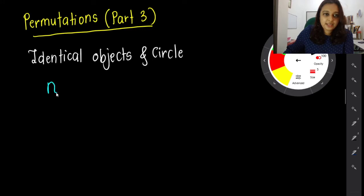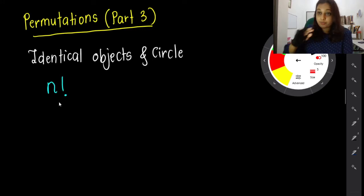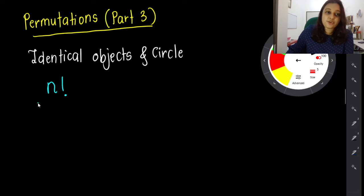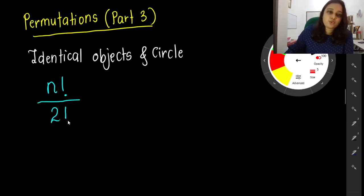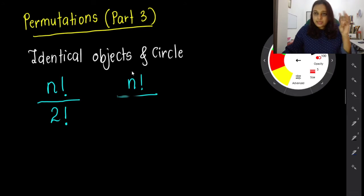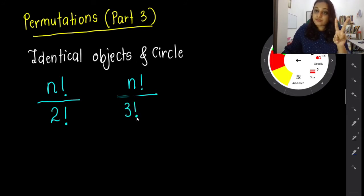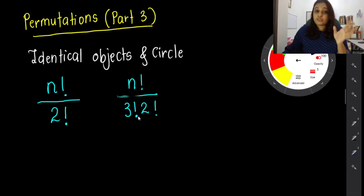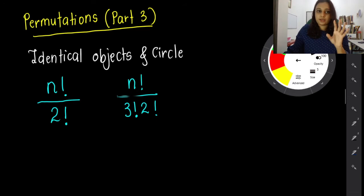The formula is: take the total number of things you have to arrange as a factorial on top. Then if you have identical items, divide by their factorials. For example, if you have three apples (same category) and two oranges (same category), the formula would be: total factorial divided by three factorial times two factorial. Let me show you using a problem-solving question.